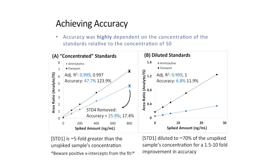Diluted standards meant that standard one was diluted to 70% of the unspiked sample's concentration. The accuracy measured for amitriptyline and diazepam was really poor at 48% and 124% respectively for the concentrated standards, whereas when appropriately diluted standards were used, the accuracy was well within validation criteria at 7% and 12% respectively.